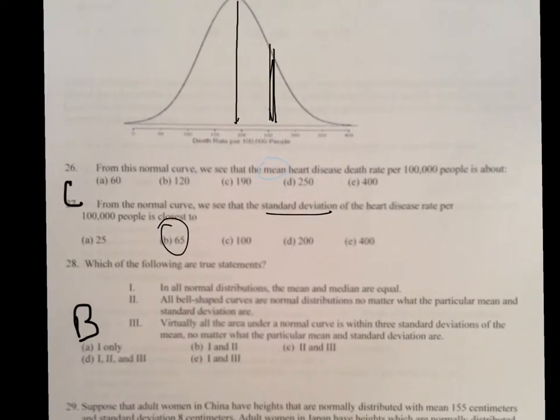Which of the following are true statements? In this case, it is B, number 1 and 2. In all normal distributions, the average and median are equal. Remember, whenever it's like this, the X bar will be here, and the median will be here. And then, all bell-shaped curves are normal distributions, no matter what the particular average and standard deviations. So, we call this normal. And, let's go to number 28.